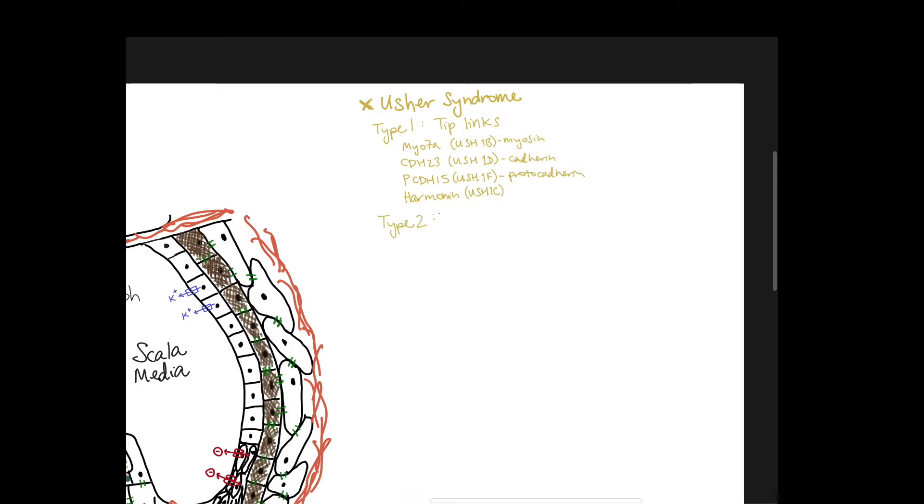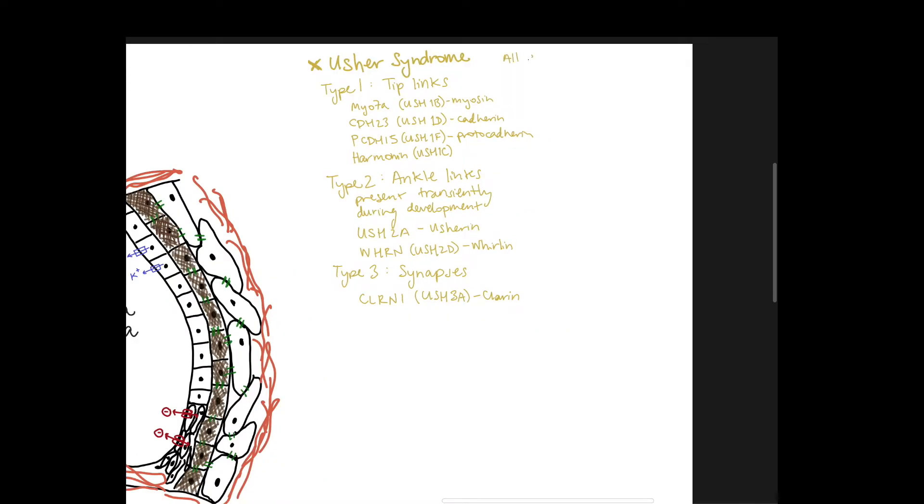Type 2 affects the ankle links. These are present transiently during development. They're not in the mature hair cells. The genes involved are Usherin, Usher 2a, and Whirlin, Usher 2d. Type 3 affects the synapses, and the main gene here is Clarin. All genes involved in Usher syndrome are located in both hair cells and photoreceptors. So what you're really thinking about is hearing loss, vestibular dysfunction, and vision loss.